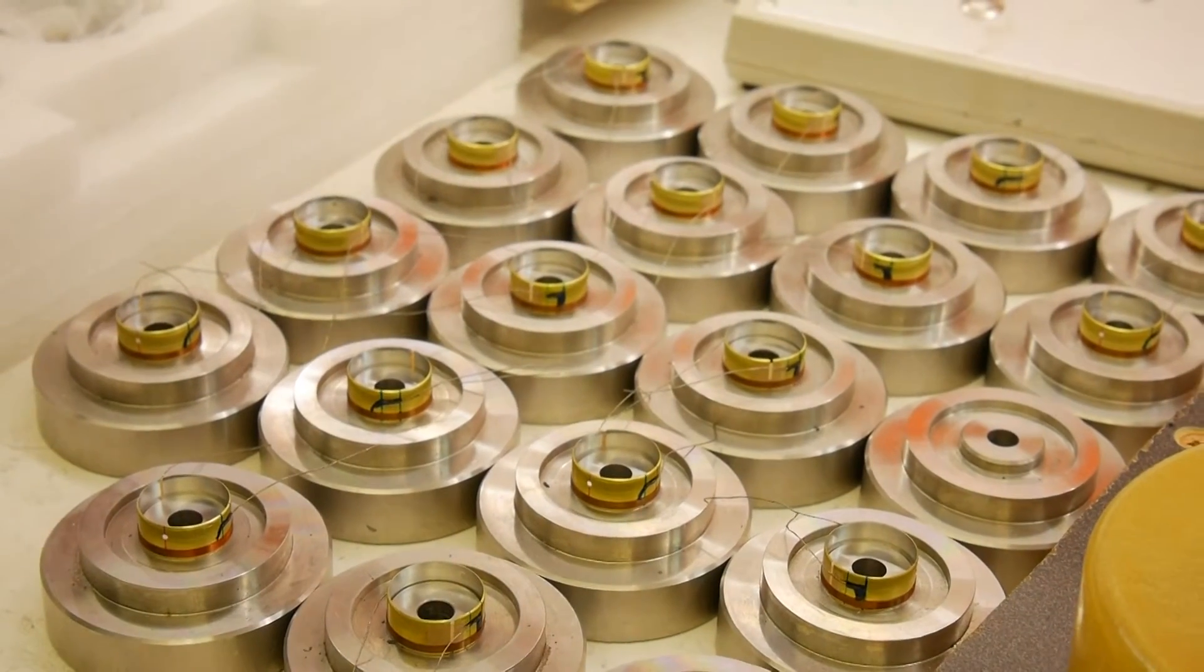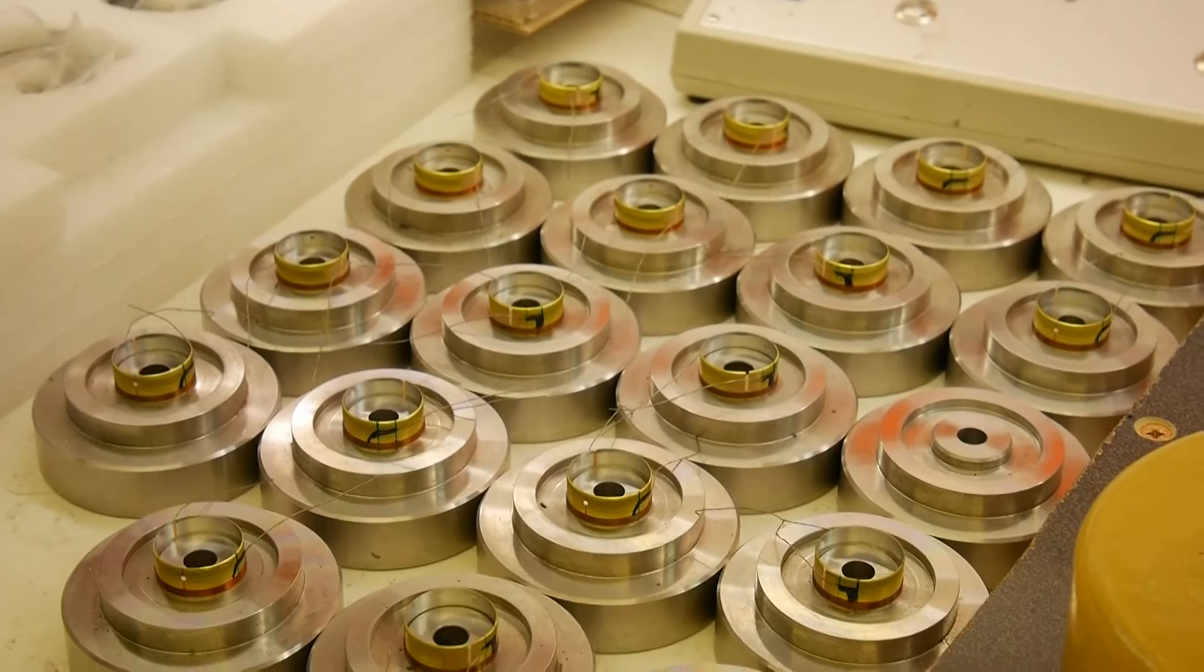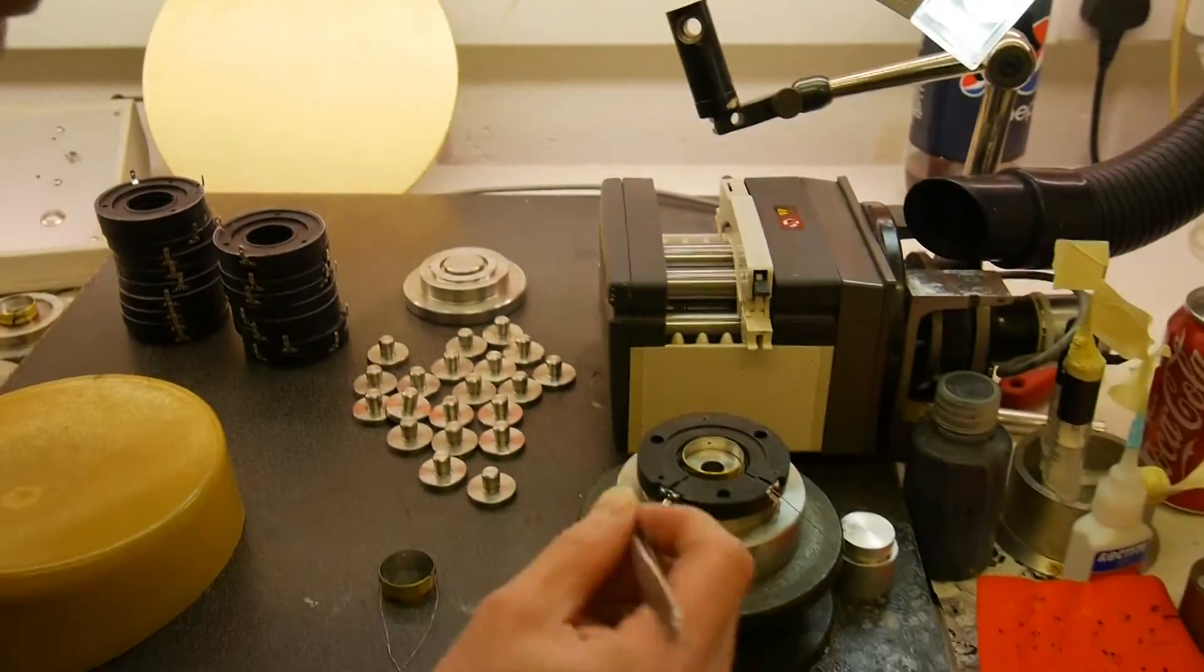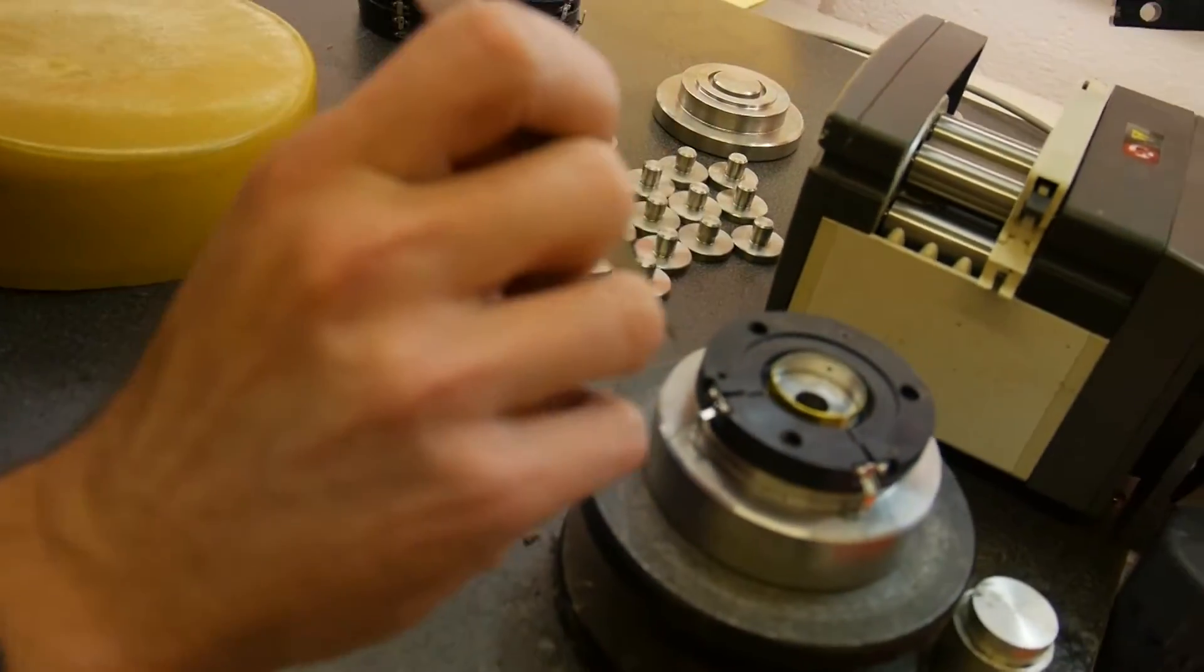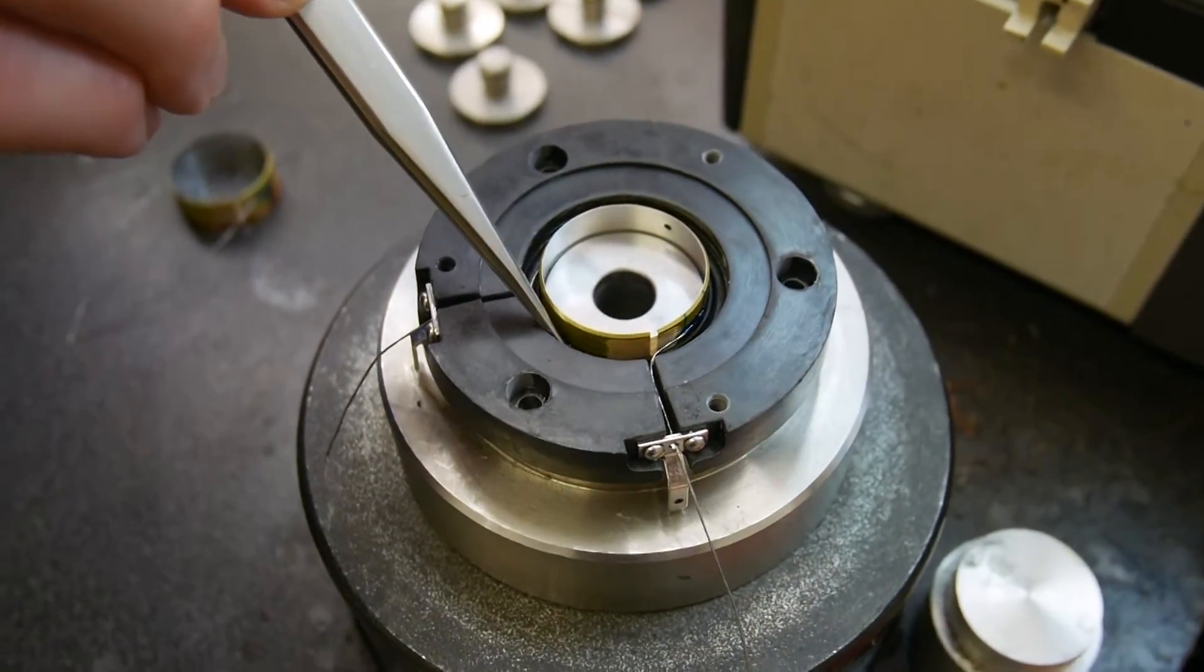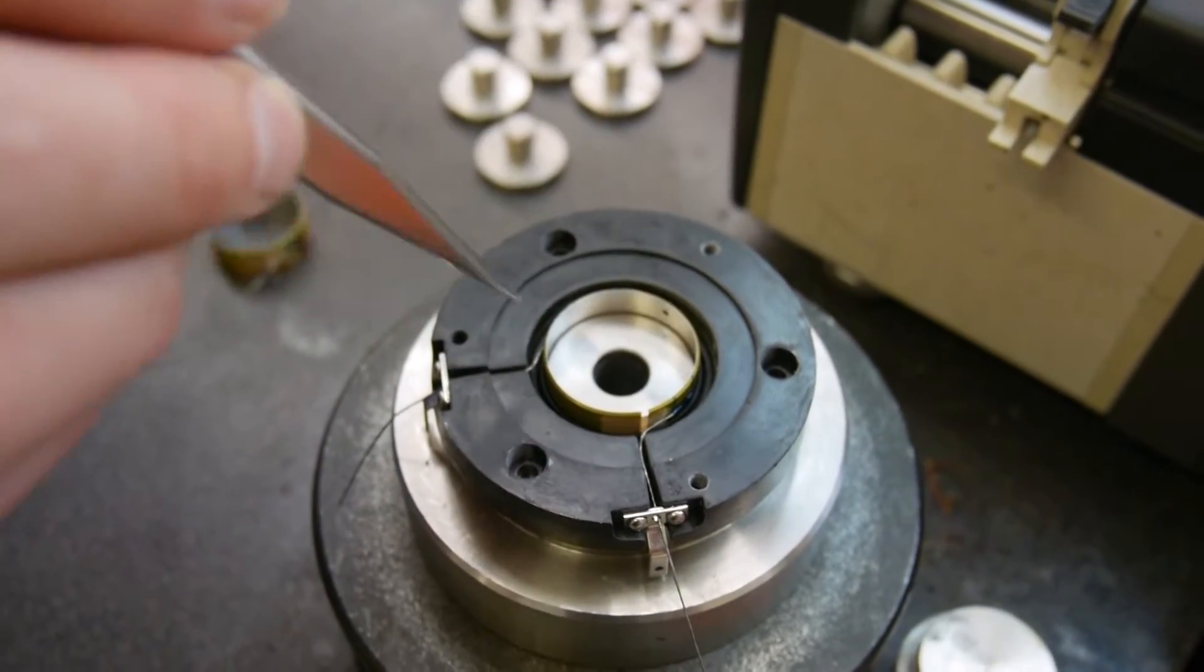The tweeter is quite unique in that it uses a dual suspension design, just like the mid-range dome. So we have a suspension fitted towards the top. Actually, if we look at this part here, we have the lower suspension fitted. You can just see down the bottom there. And this part is awaiting the fitment of its upper suspension.